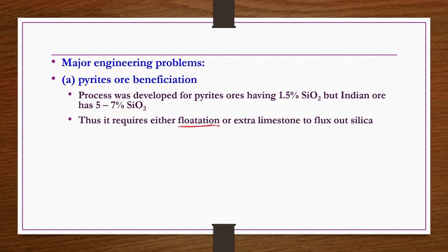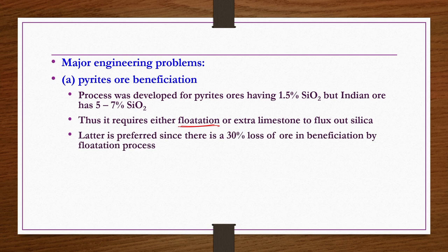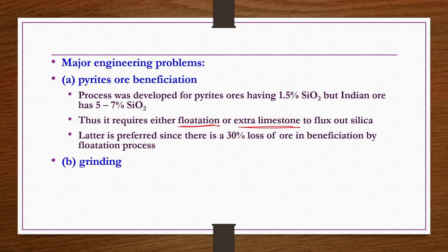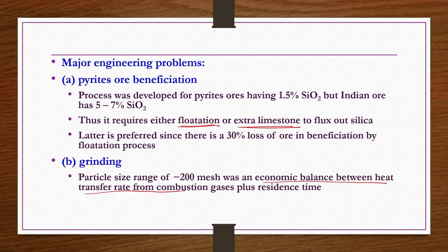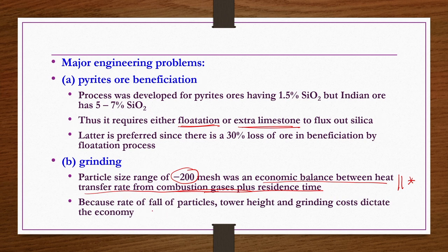Using flotation results in approximately 30% loss of ore, so it is better to use extra limestone solution to flux out the silica floating on the surface of molten FeS. Regarding grinding, the 200 mesh size is based on an economic balance between heat transfer rate from combustion gases and residence time, since settling velocity of particles, tower height, and grinding cost dictate the economy.